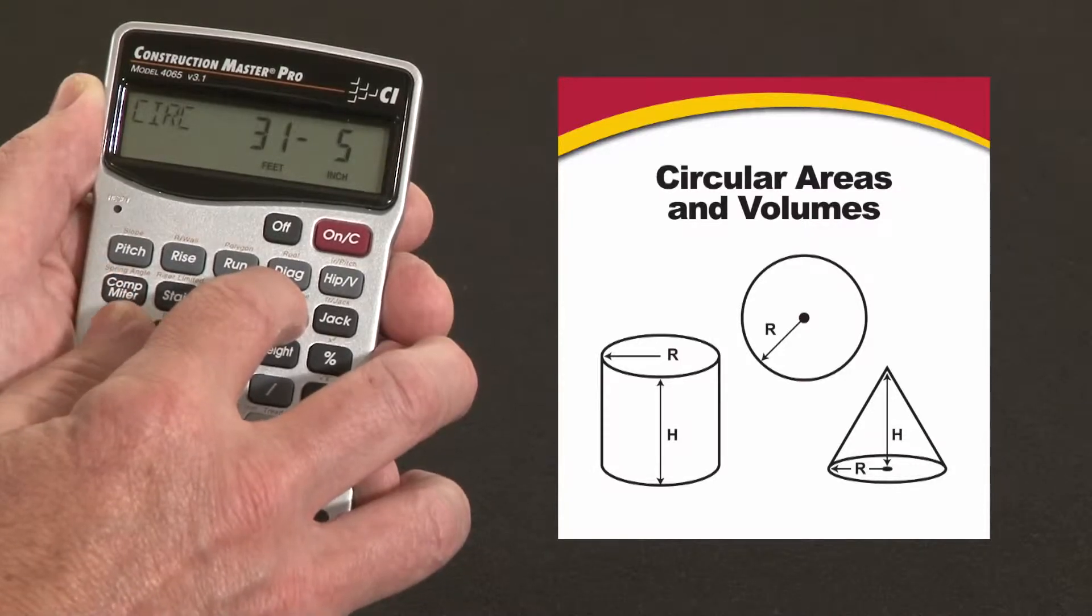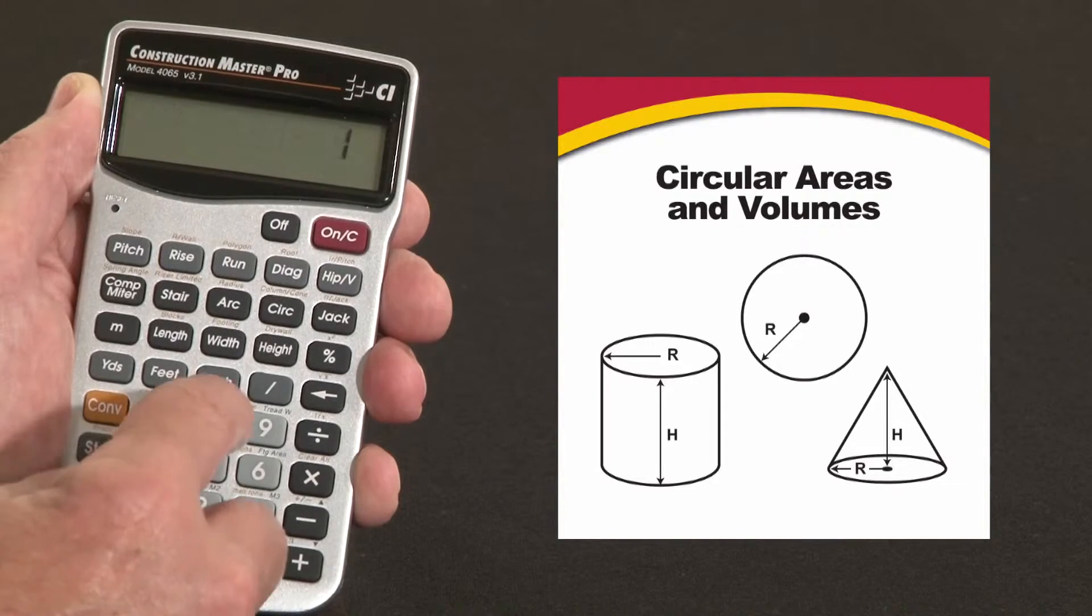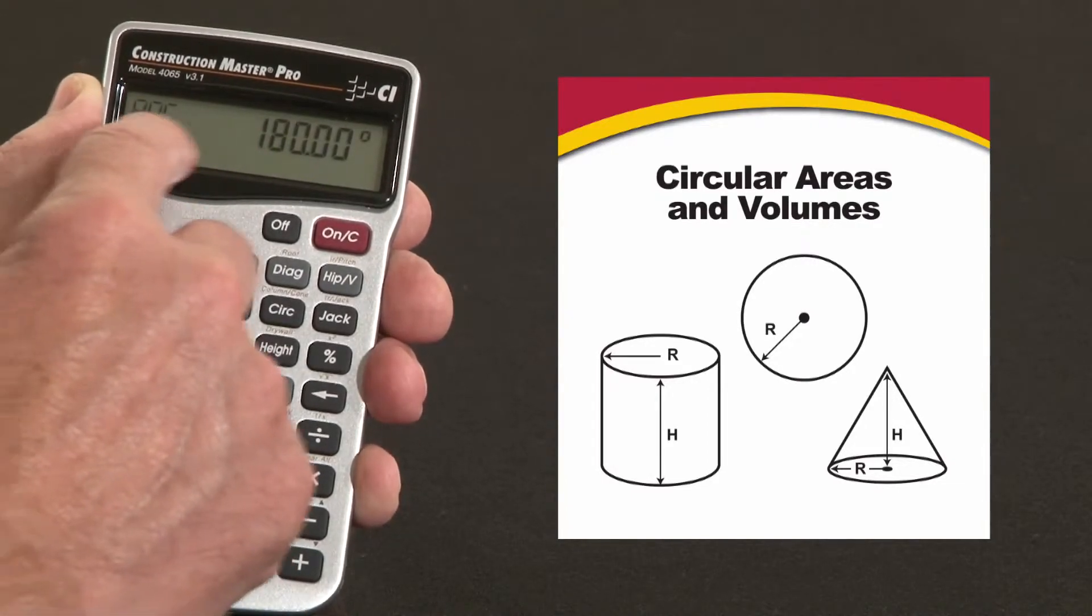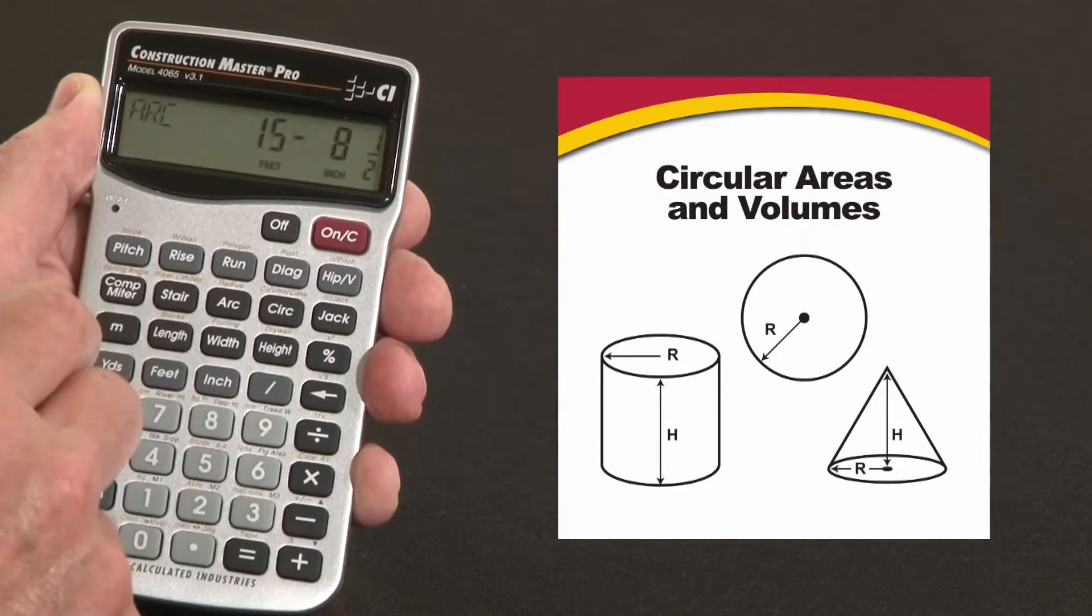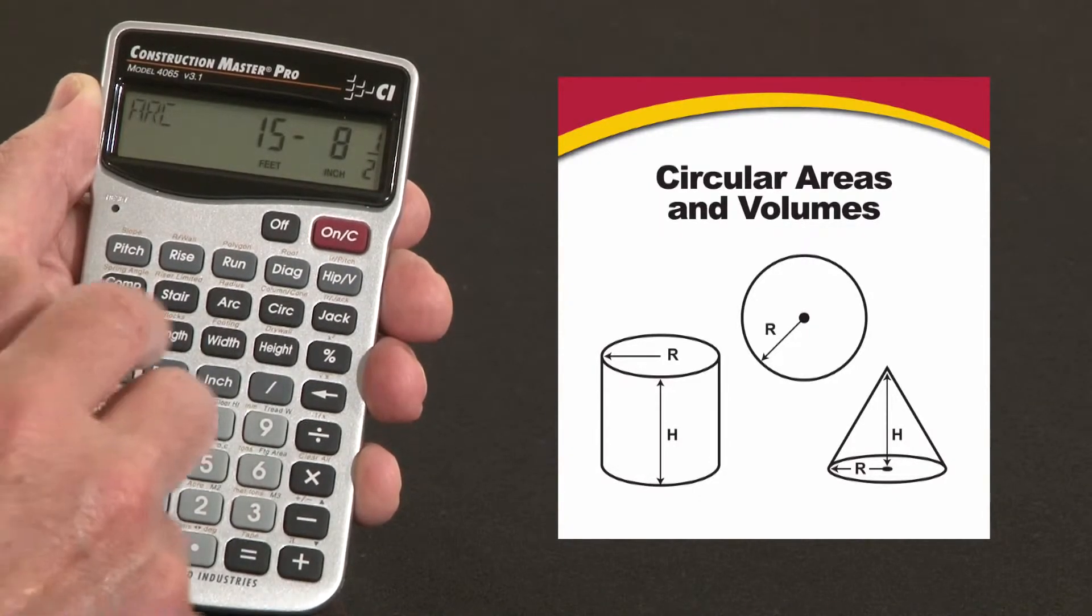The circumference of the whole circle is 31.5, but I only want half of that—I want 180 degrees. Let's say 180 is my arc length, 180 degrees. Press it again, the arc length is 15 feet, 8.5 inches around it.